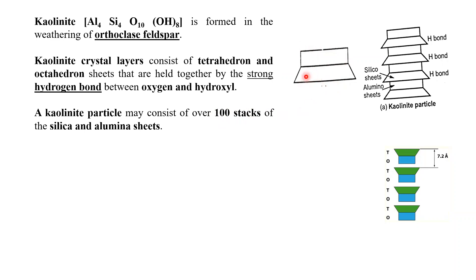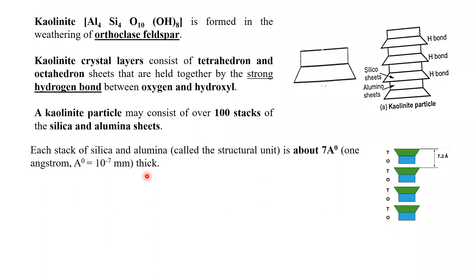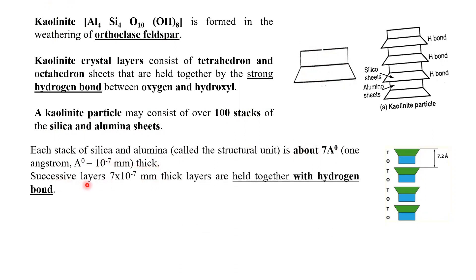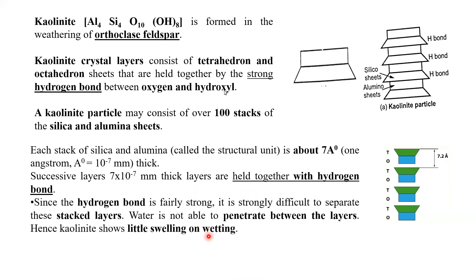Kaolinite can have 100 stacks of silica and alumina sheets, each stack called a structural unit, with thickness of about 7 angstroms. Successive layers are held together with hydrogen bonds. Since the hydrogen bond is fairly strong, it is very difficult to separate the stack layers and water is not able to penetrate between the layers. Hence kaolinite shows little swelling on wetting.